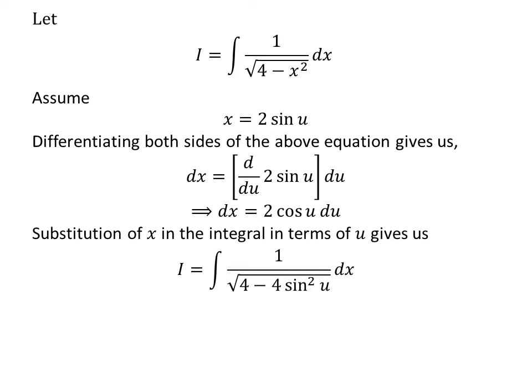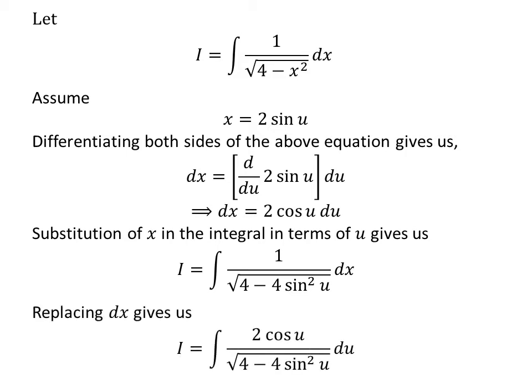Substituting x in the integral I gives us I is equal to the integral of 1 upon square root of 4 minus 4 times square of sine of u. Replacing differential of x by its value found earlier, I is equal to the integral of 2 times cosine of u upon square root of 4 minus 4 times square of sine of u.